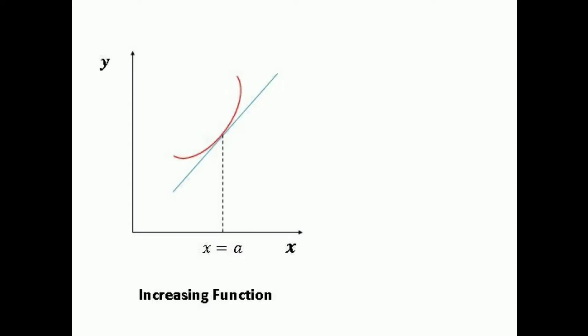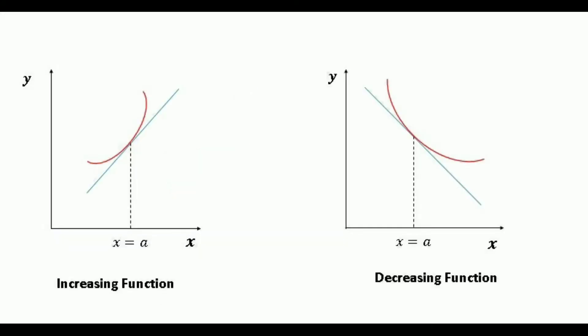The derivative of a curve at a point measures the slope of the tangent to the curve at that point, say at x equal to a. If the first derivative is positive, it means that the tangent has a positive slope at x equal to a and the function curve increases as the value of the independent variable increases. If the first derivative is negative, it means that the tangent has a negative slope at x equal to a and the function curve decreases as the value of the independent variable increases.